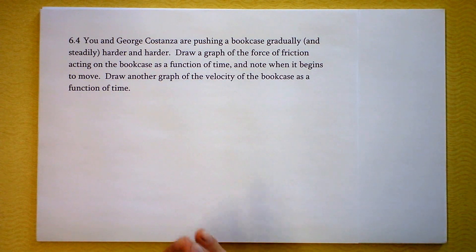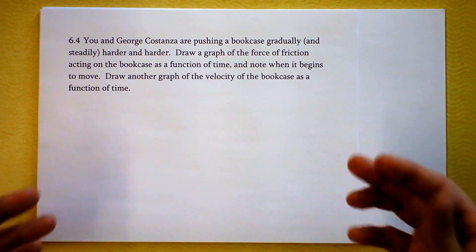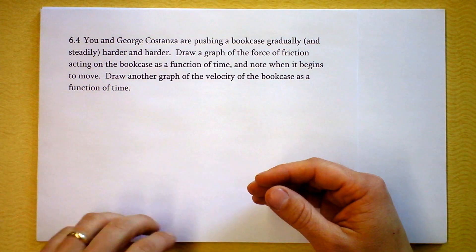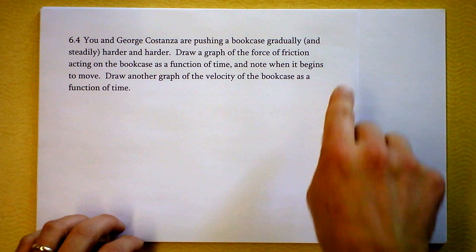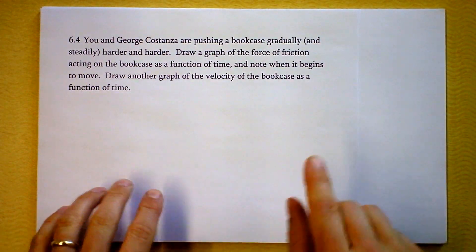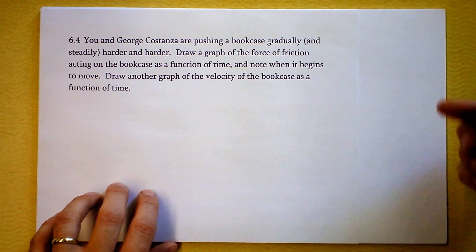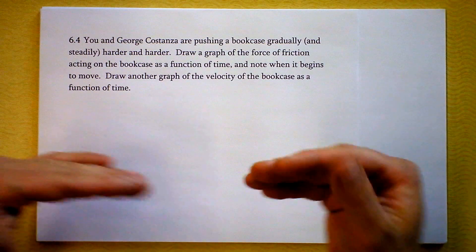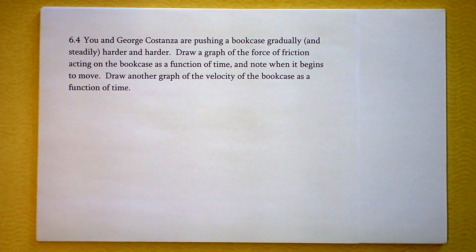The fourth problem — and there are only four this time — is a graphing problem. You and a friend are pushing a bookcase harder and harder steadily, so your force as a function of time is just a straight line tending toward infinity gradually. But the force of friction might not be the same graph, because eventually the bookcase is not going to be in equilibrium. Drawing a graph of a function can show you all kinds of awesome transitions, and that's what we're trying to do here. It's a challenging question.